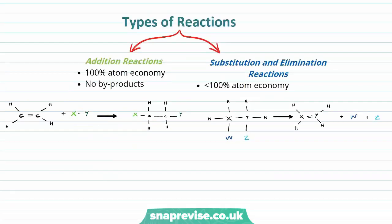Let's look at different types of reactions and their atom economies. Addition reactions have 100% atom economy — there are no by-products. You can see on the left we have one molecule reacting and adding across a double bond to form one single product. In substitution and elimination reactions, the atom economy is less than 100%, because one reagent forms more than one product, resulting in by-products or waste.